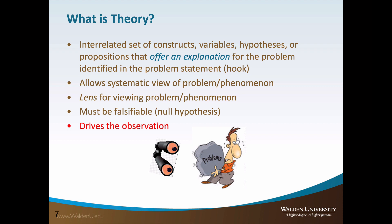A feature of the theory is that it must be falsifiable. Falsifiability is the capacity for some proposition, statement, theory, or hypothesis to be proven wrong. This concept was introduced by the philosopher of science Karl Popper, who proposed that statements and theories that are not falsifiable are unscientific. Declaring an unfalsifiable theory to be scientific would be pseudoscience. The theory also drives the observation, which will be discussed later. Please review the role of theory in quantitative research video tutorial for further detail.